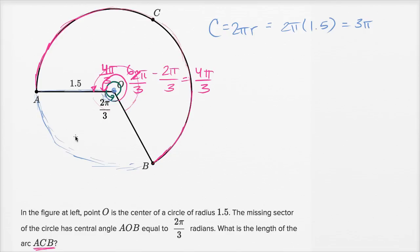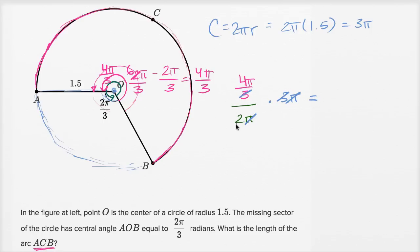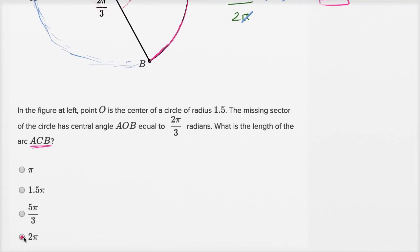What fraction is four pi over three of going all the way around the circle? The central angle is four pi over three, and going all the way around is two pi. That fraction times the entire circumference gives us the arc length: four pi over three divided by two pi, times three pi. The pi's cancel and the threes cancel, leaving four pi over two, which equals two pi. So the length of arc ACB is two pi — exactly two-thirds of the entire circumference.